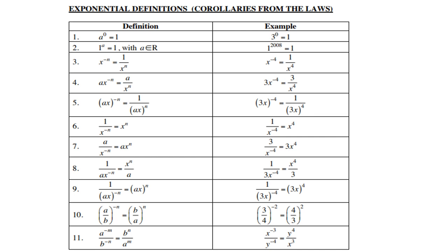The third definition: x to a negative exponent — how do we make it positive? By writing it under 1. For instance, x to the power negative 4 is 1 over x to the power positive 4. For a times x to the power negative n, remember a is not part of x, so a remains as the numerator and only x to the power n goes to the denominator. For example, 3 times x to the power negative 4 becomes 3 over x to the power positive 4. The 3 does not change.